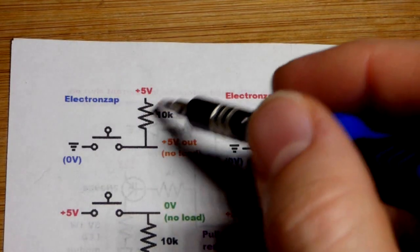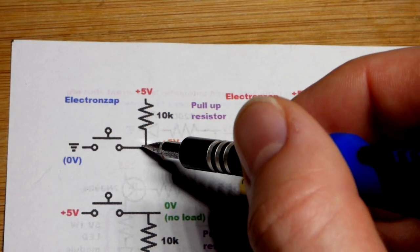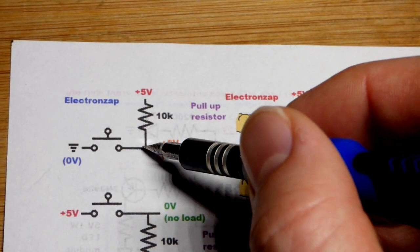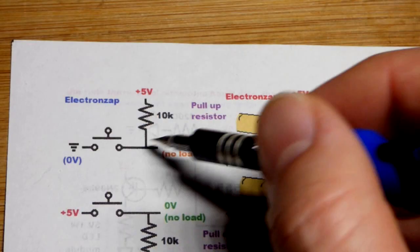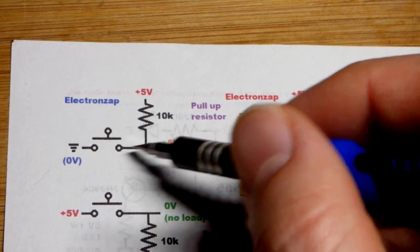So now the pull-up resistor is connected to the positive supply and then wherever you want the output for this circuit fragment to be. It's the input to something else though. In this case, it was the probe for the oscilloscope that I was using. We have a switch.